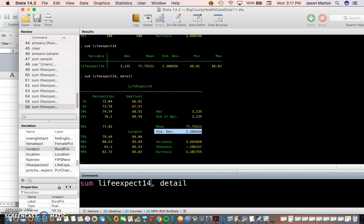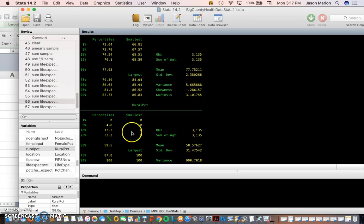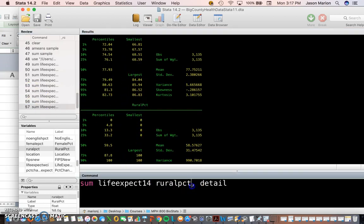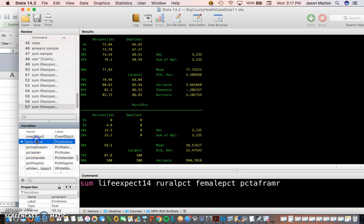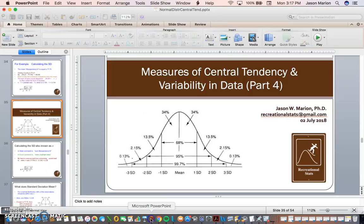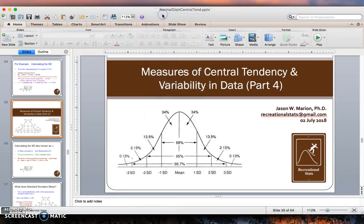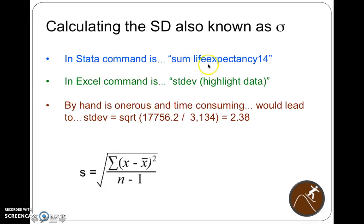You can do multiple variables at the same time. I can do rural percent and get detailed information on both life expectancy and rural percent in the same command. I can get rid of detail and put in lots of variables: life expectancy, rural percent, female percent, percent African American, and get the mean for all of those for the counties in the United States. Pretty simple to do. Much easier to do it that way than by hand or in Excel using a bunch of formulas. Very easy, and ultimately they're doing the same formula.